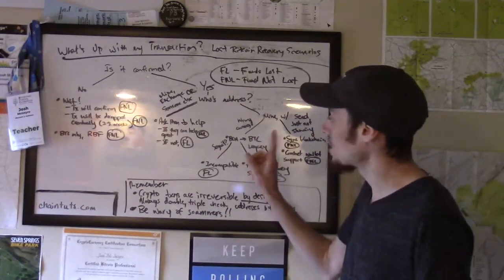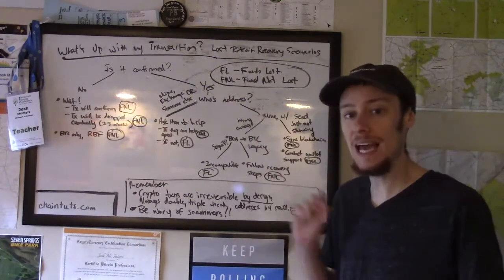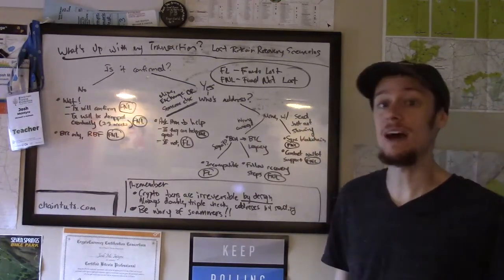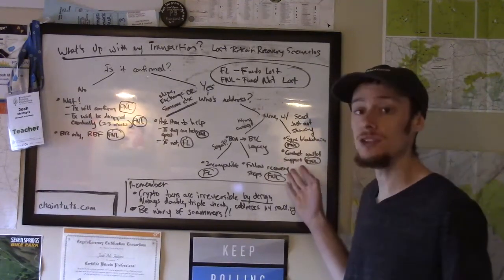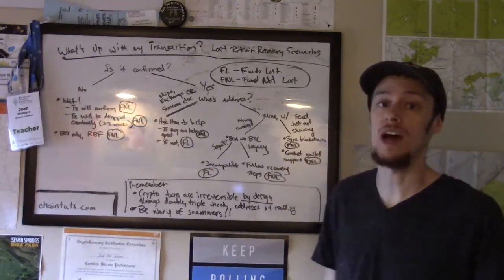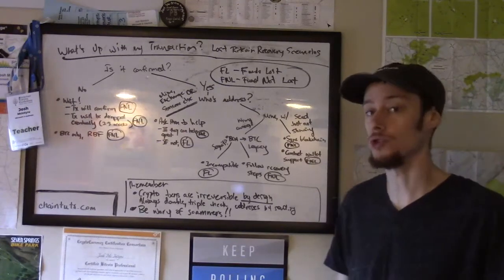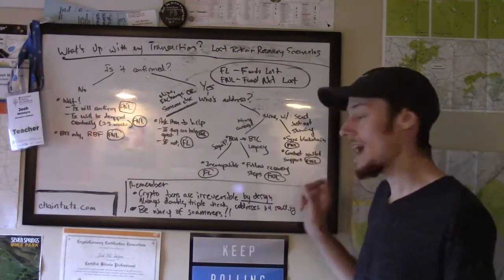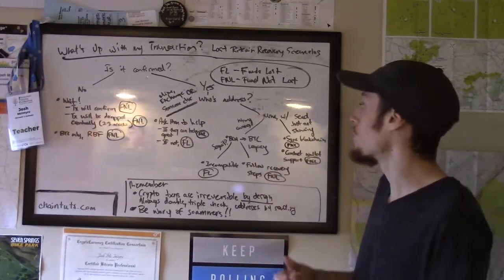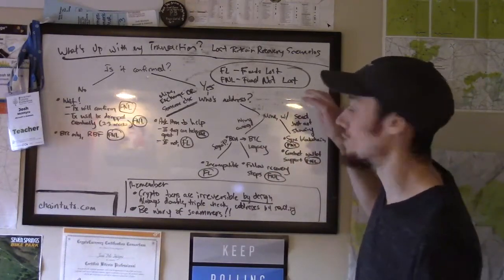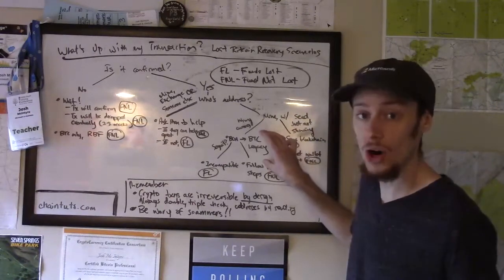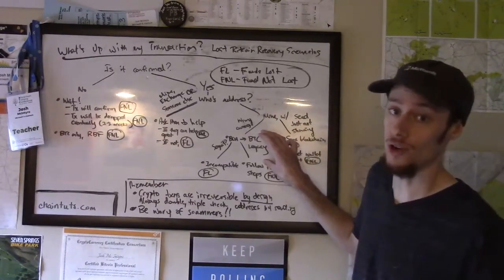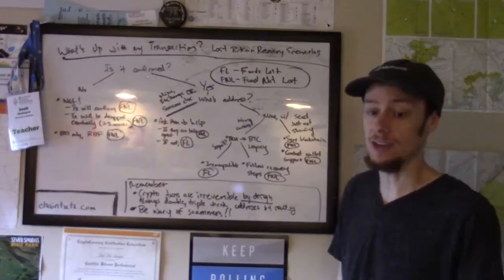Now, if you sent to the wrong currency, but it's a legacy address starting with A1, there is definitely hope in this scenario. In this case, you would need to follow some technical recovery steps that I've outlined in previous tutorial videos. In this case, if you get here, so you have a wallet, you've sent to a wallet that you do have a seed phrase or private keys for, but it's the wrong currency starting with a 1 address, you can generally recover in that case.